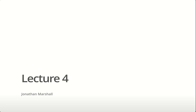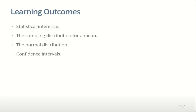Welcome to lecture four for biostatistics. Today we're covering the key part of statistics, which is statistical inference — the process of moving from a sample to a population. Given a sample, a subset of the population that you've looked at, how can you infer things or say things about a population which you haven't looked at in detail? We take a small proportion of the population and, using the fact that it's representative, say something about the population.